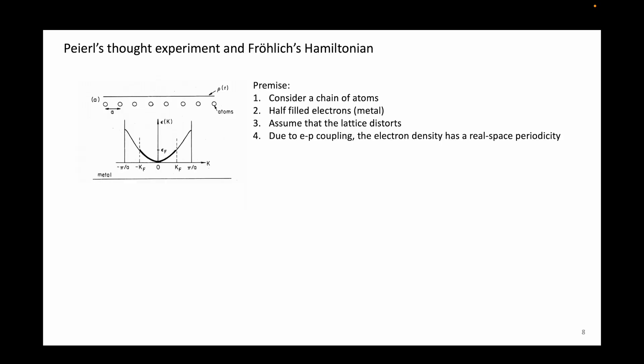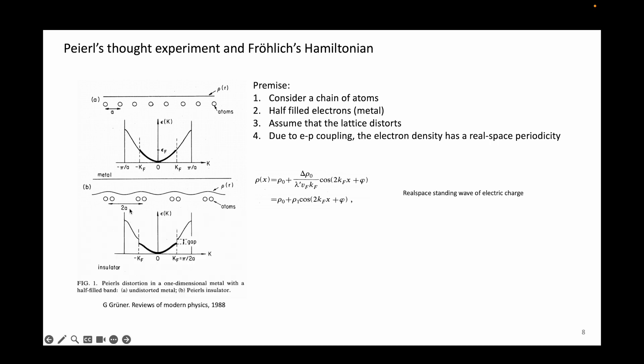But for the sake of theoretical understanding, let's consider the original thought experiment of a 1D chain of atoms. The premise is this: Consider a chain of atoms with a half filled metallic band structure. As you cool down this system, it undergoes a lattice distortion which causes the lattice to adopt a larger lattice parameter of, say, 2A instead of A. Then, due to electron phonon coupling, the electron density adopts a real space periodicity that is larger than the original periodicity. Because of this expansion of the lattice parameter, the Brillouin zone shrinks by half, causing a band gap to form at the edge of the new Brillouin zone. Therefore, we can define charge density wave as a real space modulation of electronic charge, resulting from lattice distortions which cause a metal to insulator transition.